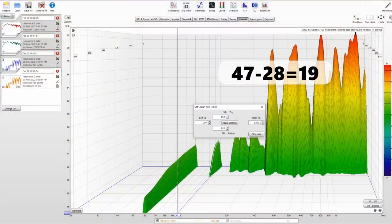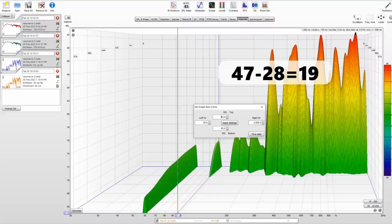So to figure out the offset between the accelerometer and the microphone, what I need to do is take that 47 and subtract 28, which is the second result. And it gives me 19 decibels between the microphone and the accelerometer.